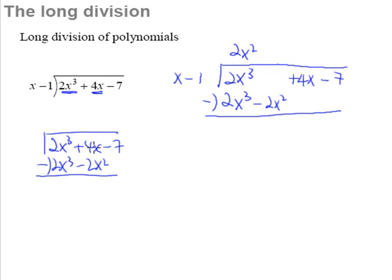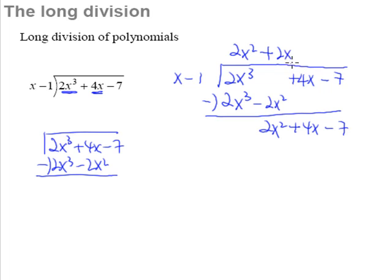Something multiplied by x gives 2x cubed, so that is 2x squared. Then 2x squared multiplied by negative 1 gives negative 2x squared. We subtract: 2x cubed minus 2x cubed is zero. With the space, you see that 0 minus negative 2x squared gives positive 2x squared. Bring down 4x and negative 7, then continue. Something multiplied by x gives 2x squared, so that is 2x. Then 2x multiplied by negative 1 gives negative 2x. Subtracting: 4x minus negative 2x gives 6x, leaving us with 6x minus 7.